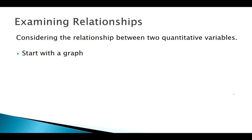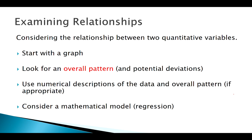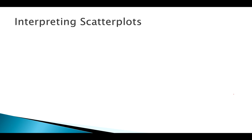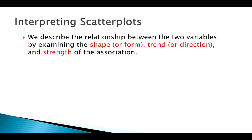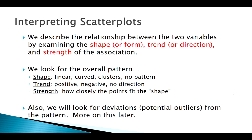When looking at a scatterplot, there are three main things we're looking for: shape, trend, and strength. Shape describes the form of the pattern; trend describes the direction; and strength describes how tight the spread is. We'll also look for outliers, though that works a little differently in the bivariate case.